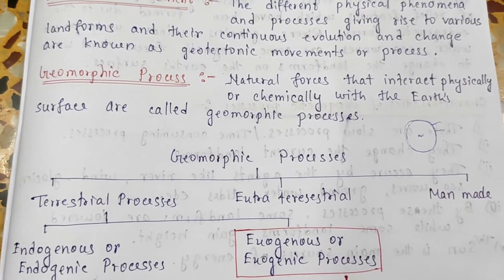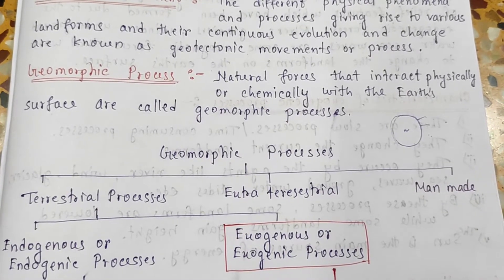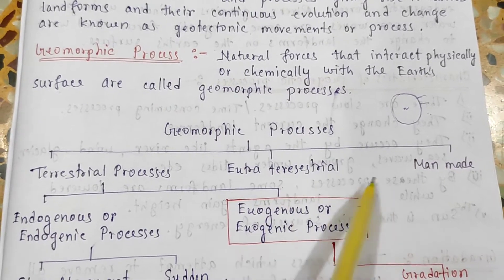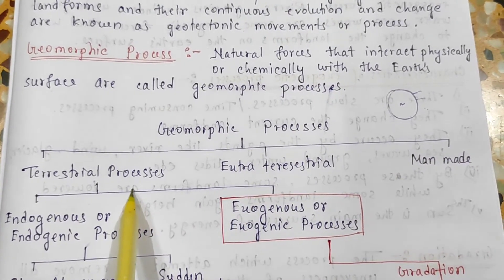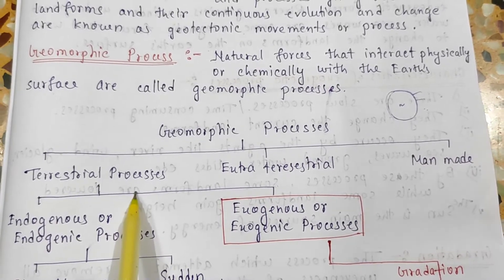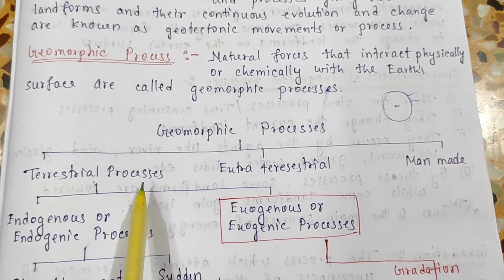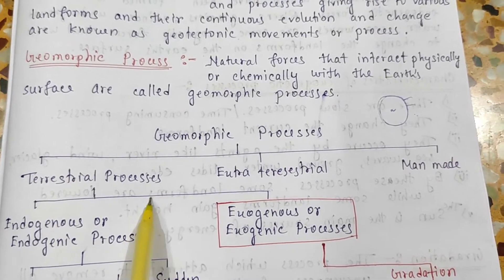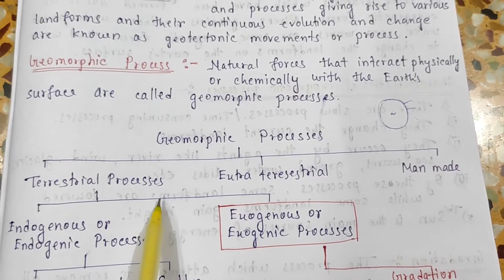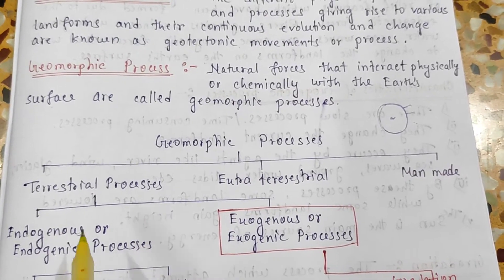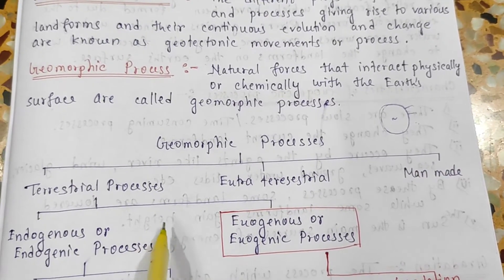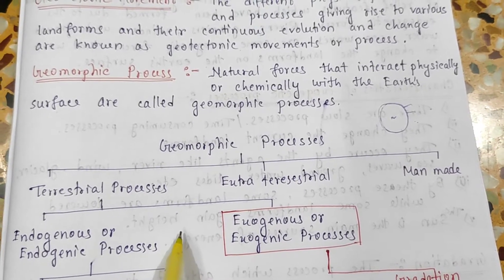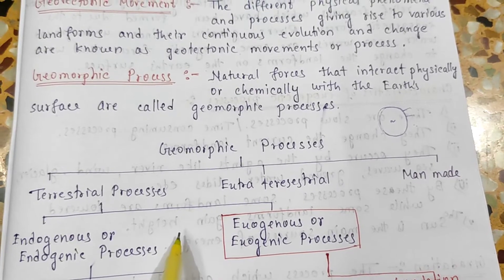Geomorphic processes can be divided into three parts: terrestrial process, extraterrestrial process, and manmade process. The geomorphic processes which are active on the earth's surface, meaning inland, are called terrestrial processes. These terrestrial processes play a vital role in shaping the features on the earth's surface.